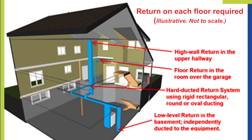On the second floor we would install a high wall return air in a common area. However, if there is a bonus room over a garage or a bedroom over a garage, that would have to be a low wall location.